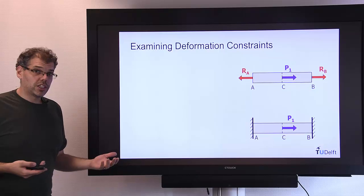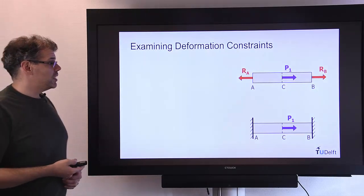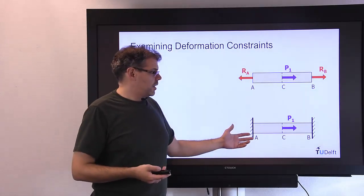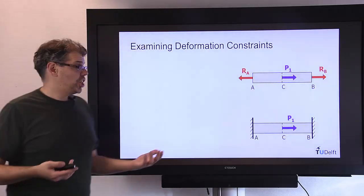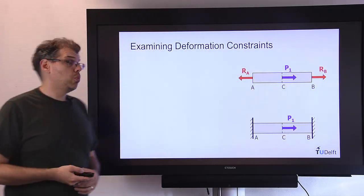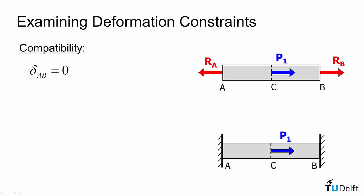If we examine the deformation constraints in our problem we can see very clearly that the overall length of the rod cannot change. It is fixed between two walls. So our compatibility equation is delta AB has to be equal to zero.